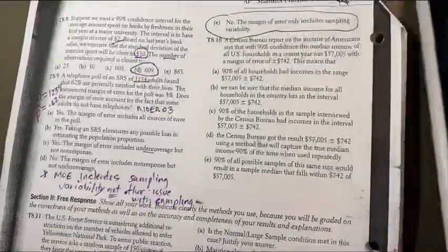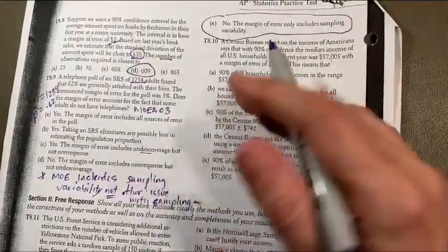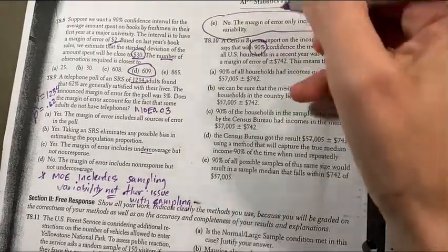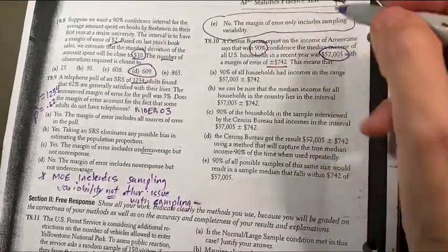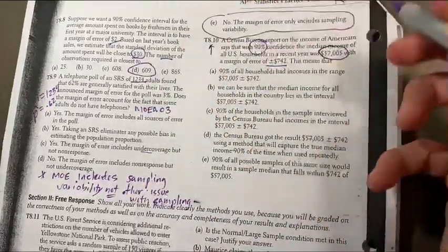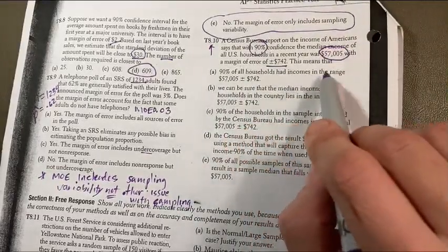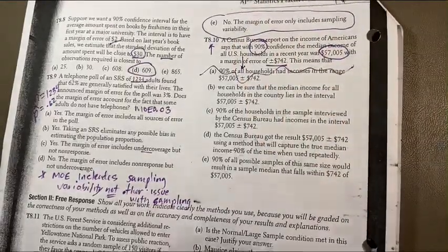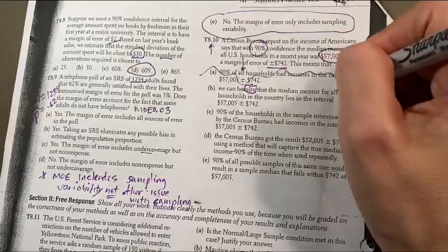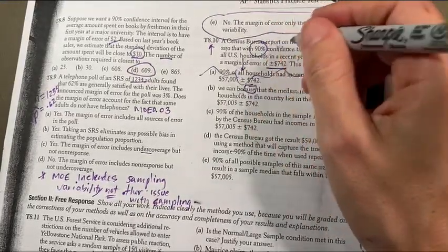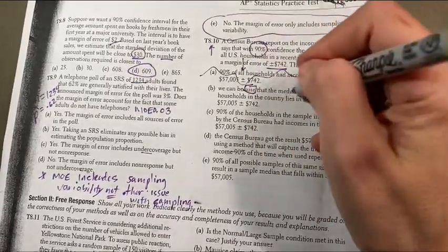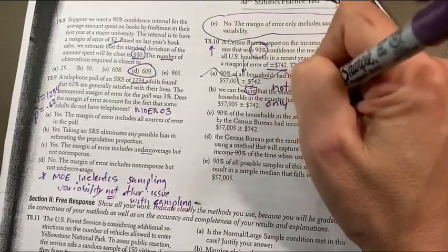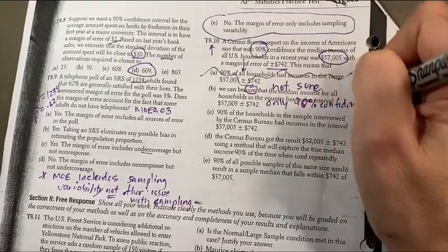Last question. So it says, a census bureau reported on the income of Americans saying 90% confident in the median income in all U.S. households is this, with a margin of error of this. What does this mean? Okay, so this question has a lot to do with the one from before. So, 90% of all households have it in that range. No, that's not what this is saying. Not 90% of all, no. We can be sure that the median income, sure. Ooh, that's a problem. We can be sure that the median income for all households lies in this interval. No. We're only 90% confident that the median ends up. We're not sure. Not sure. Only 90% confident that the interval lies in there.